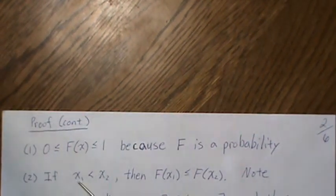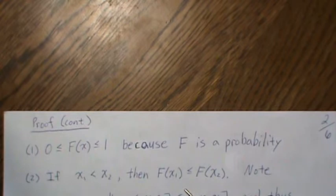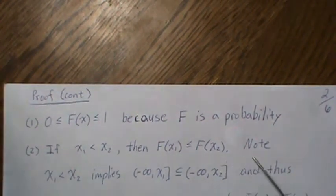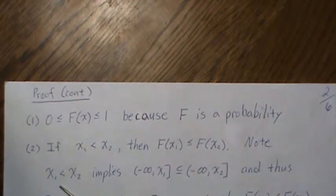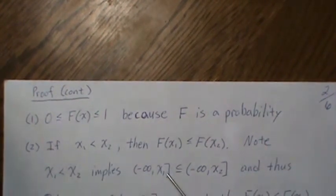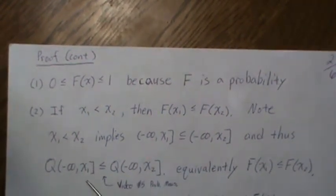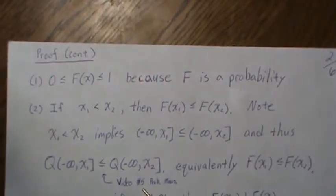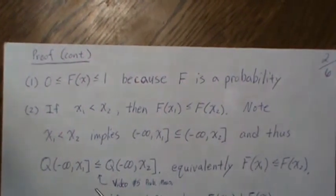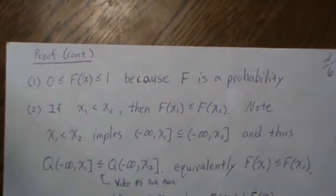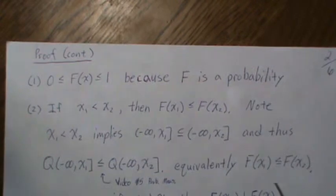To show F is non-decreasing: if x2 is strictly greater than x1, then F of x2 has to be greater than or equal to F of x1. Note that if x2 is strictly greater than x1, then the set corresponding to x1 is actually a subset of the set for x2. From video five on probability measures, if one set is a subset of another, the probability measure is non-decreasing, which implies F of x1 is less than or equal to F of x2. So we're done.